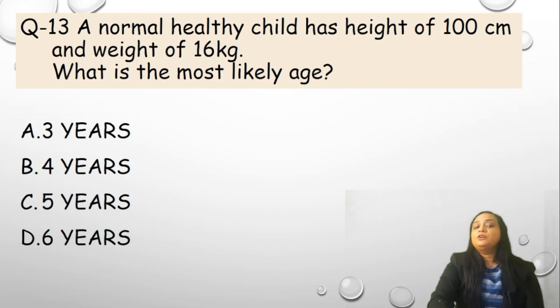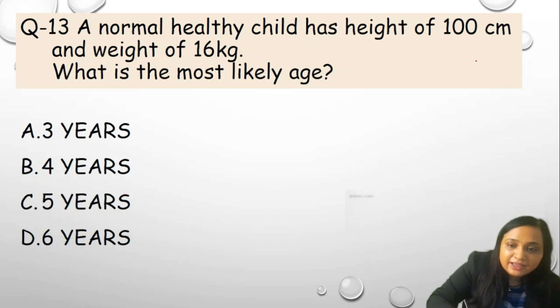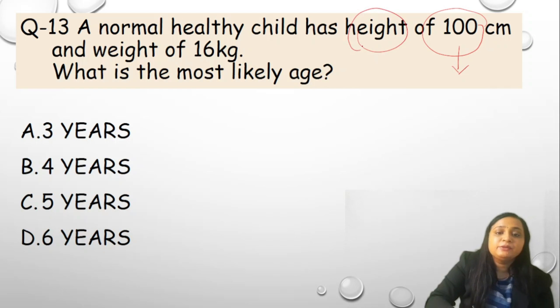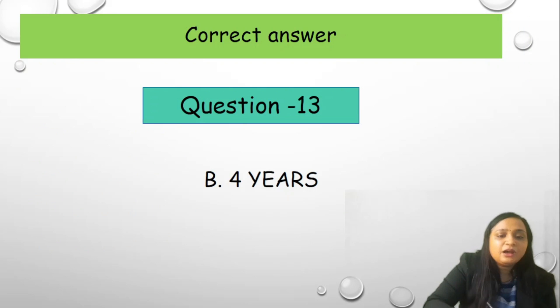Question number 13. A normal healthy child has a height of 100 cm and weight of 16 kg. What is most likely age? Whenever you see the 100, one number should strike you in your mind in reference to height because we have discussed it so many times. Options are 3 years, B 4 years, C 5 years and D 6 years. We will discuss how does it ended up with the option B 4 years.